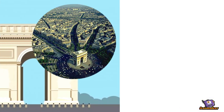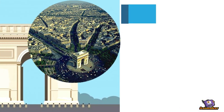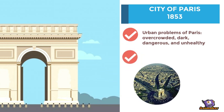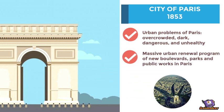Haussmann's renovation of Paris imposed new patterns of road boulevards and great parks over the previous labyrinthine street pattern.